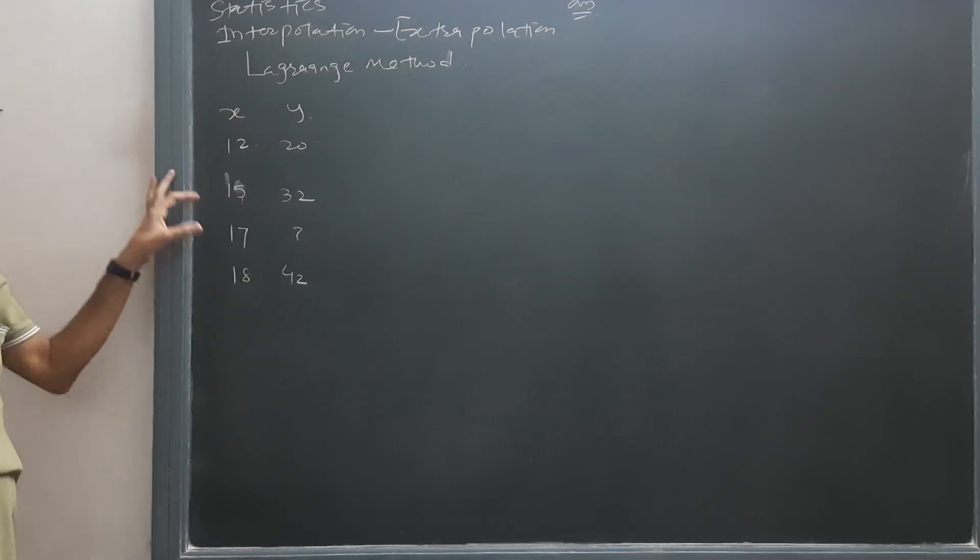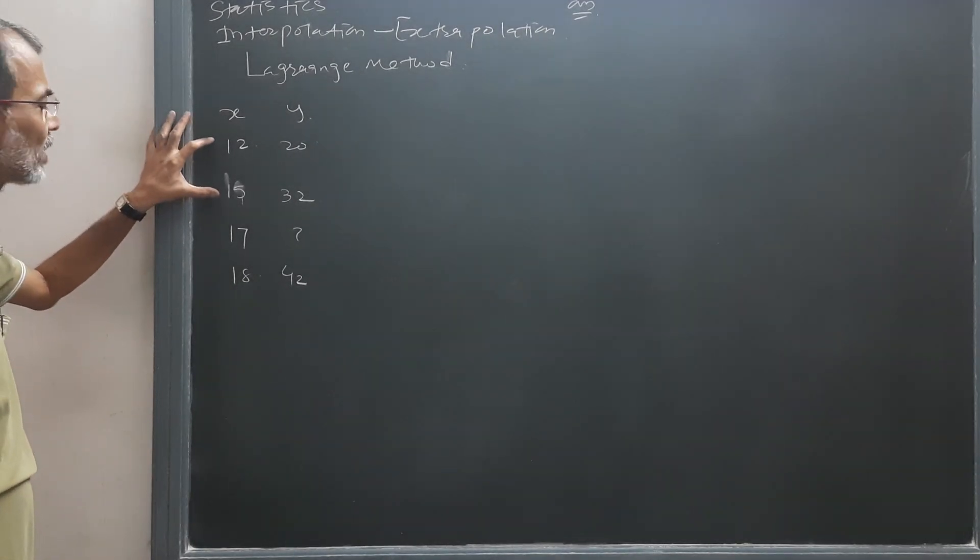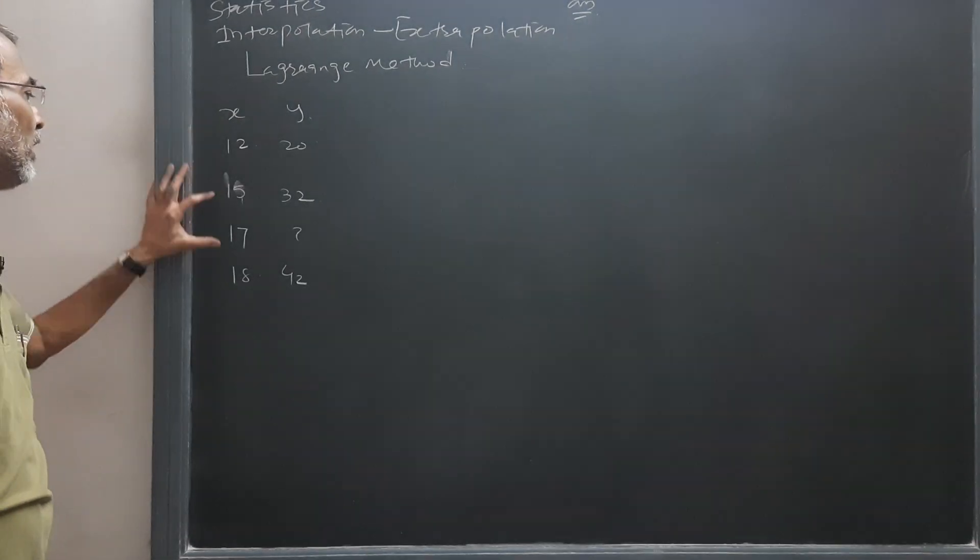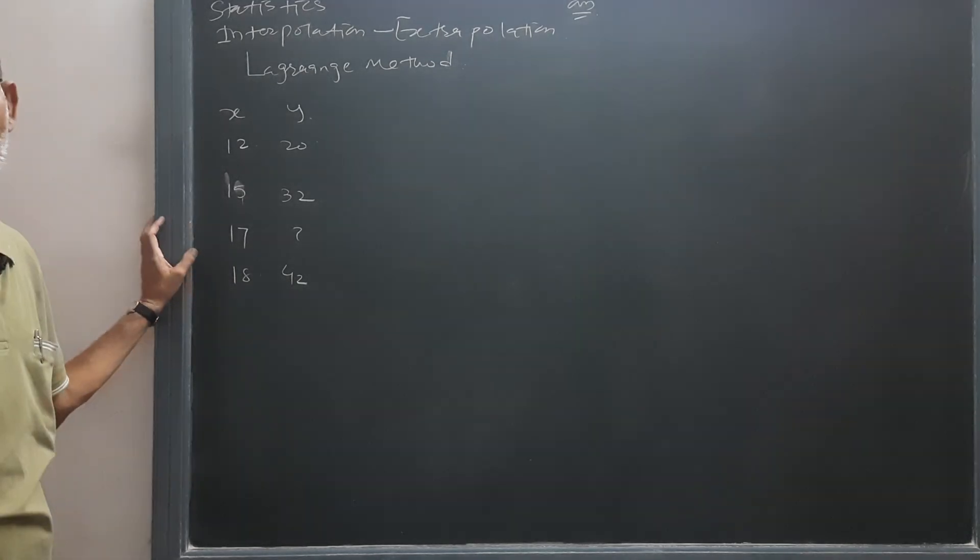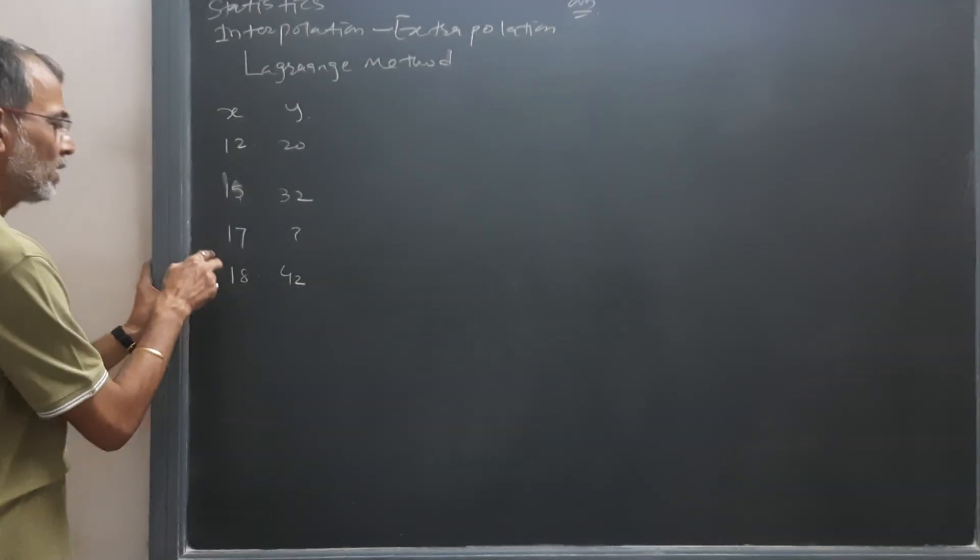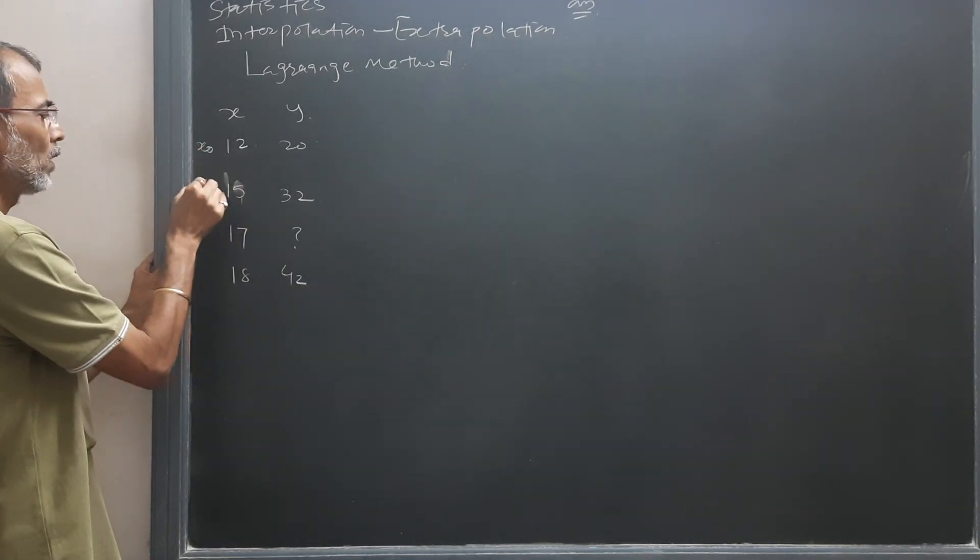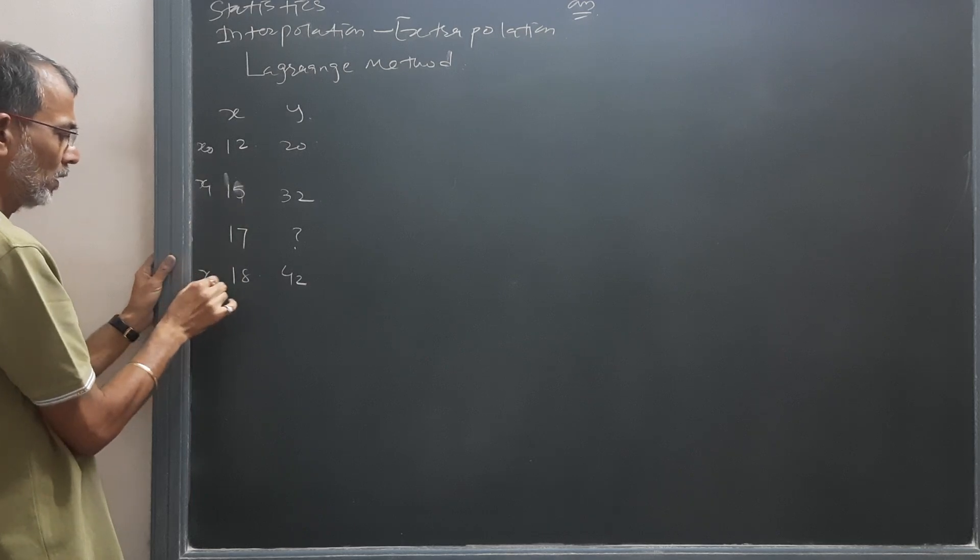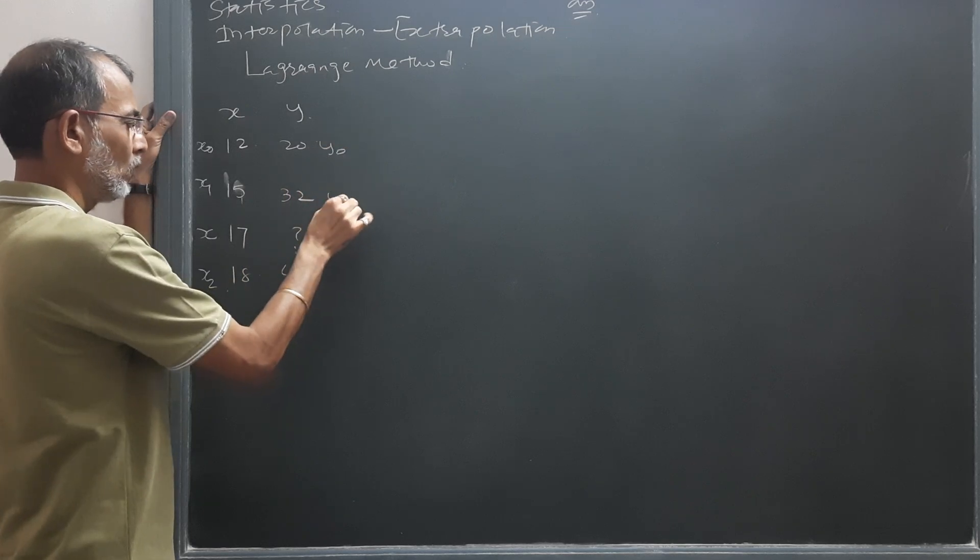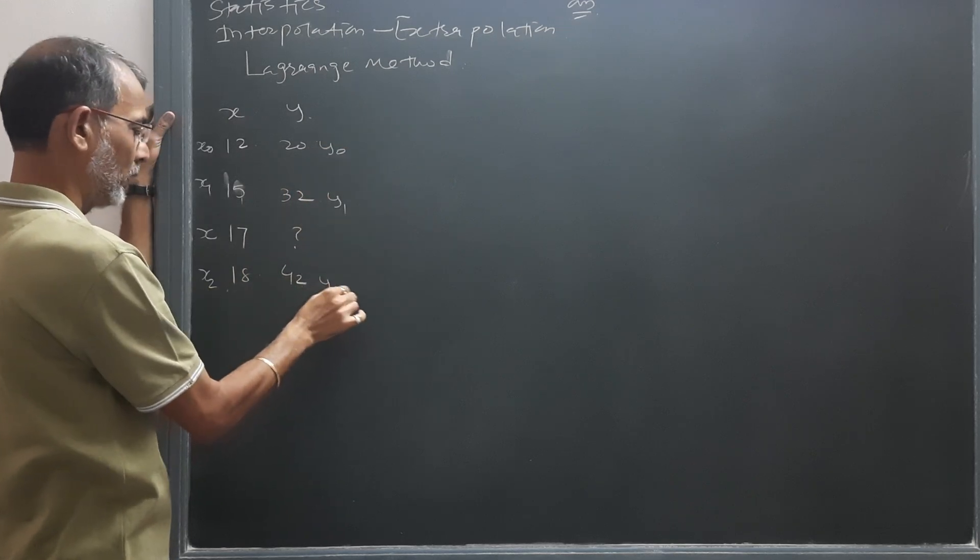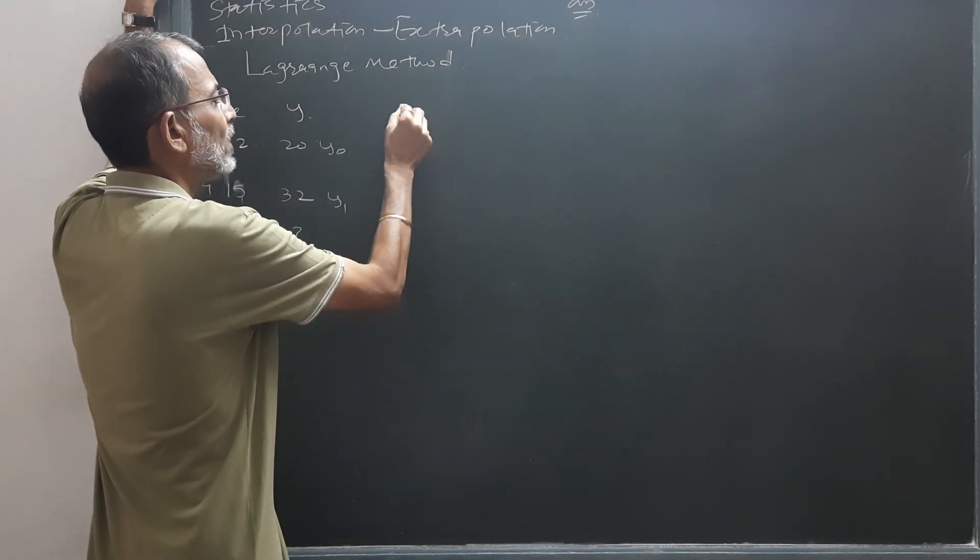Now see here, value of x and y are given. Distance between these two variables is 3, while these two variables 2, here 1. That means distance is unequal and against 17, y is not given. So this will be x0, x1, x2, and this will be our x. y0, y1, and y2.